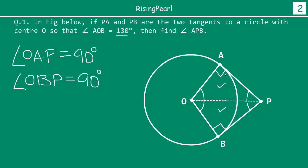Looking at these two triangles, both have a 90 degree angle. The side opposite to 90 degrees is the hypotenuse. In triangle OAP, OP is the hypotenuse, and in triangle OBP, OP is also the hypotenuse — so OP is common to both triangles. Also, OA equals OB because both are radii of the circle with center O. We can also note the tangent lengths PA and PB are equal from the second theorem.